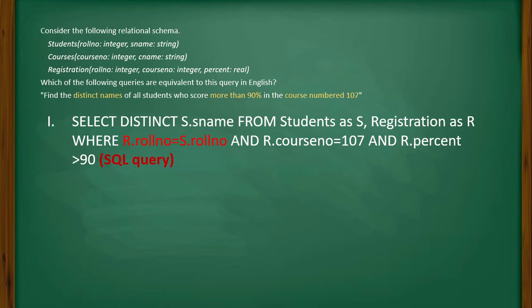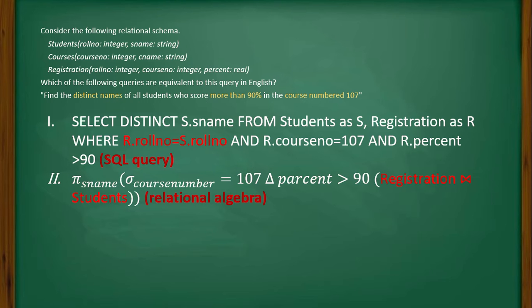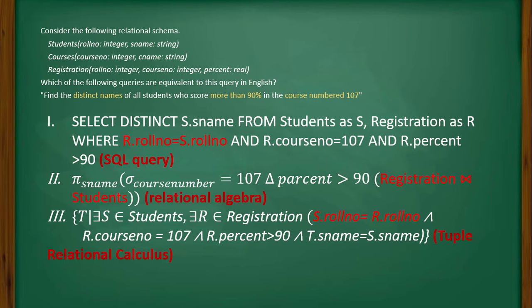The first query is: SELECT DISTINCT s.name FROM student AS s, registration AS r WHERE r.roll_number = s.roll_number AND r.course_number = 107 AND r.percent > 90. This is a simple SQL query. The second query is a relational algebra query: π s_name (σ course_number=107 ∧ percent>90 (registration × student)).